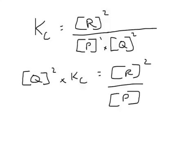So what we want to do is rearrange to get Q on its own. We move the Q squared up to the top to the other side. Therefore Q squared times Kc equals R squared over P. So we now need to go to the next slide to get the value for Q.